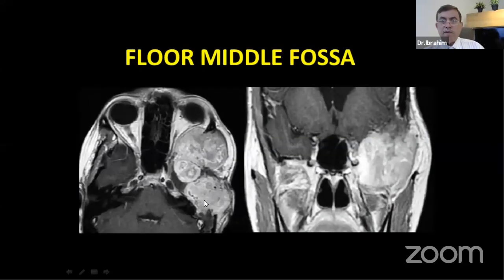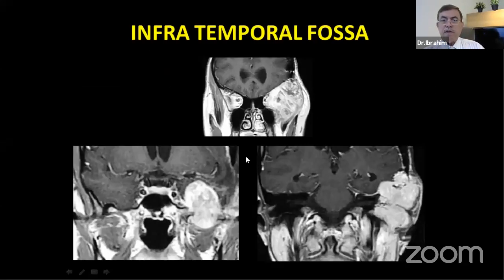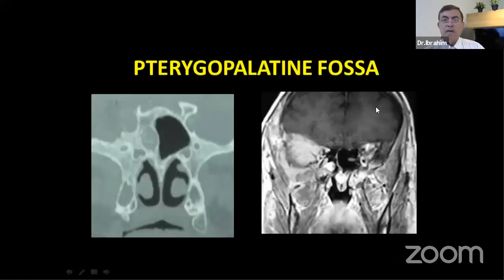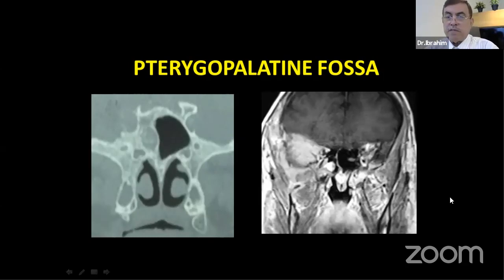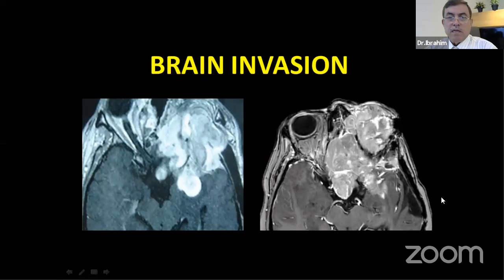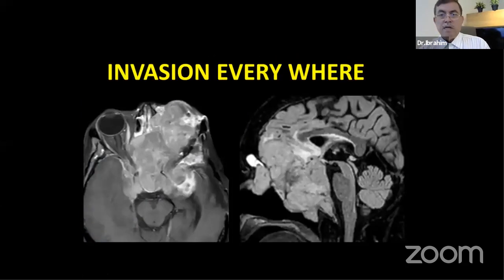You may find small subcutaneous nodules extending from the tumor. The floor of the middle fossa may be involved, and infratemporal fossa involvement as well. Pterygopalatine fossa involvement: from the anterior clinoid, body of sphenoid, going into the pterygoid plates and pterygopalatine fossa. Tumor can cause brain invasion — I will show some slides from my cases where the brain was invaded.